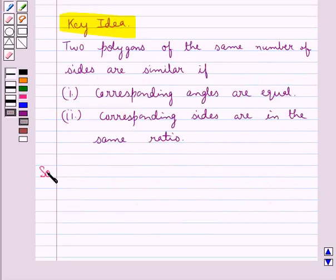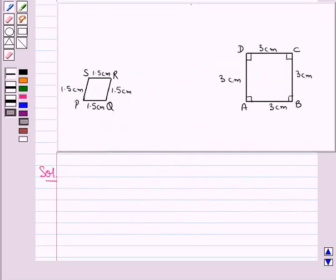Let's move on to the solution. As you can see, both these quadrilaterals PQRS and ABCD have four sides. Now let's check if their corresponding angles are equal or not.